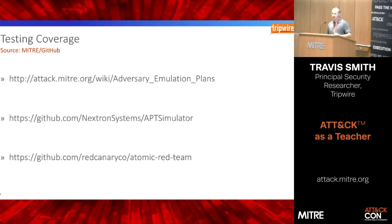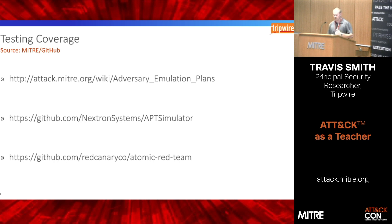There are a couple of resources I use to get red teaming going faster for my teams. The adversary emulation plans from MITRE are really good. APT Simulator is another neat one. And the atomic red team is really good — but I'll let them talk since they're here the next couple of days. Very good resources for ramping up your red teaming program.